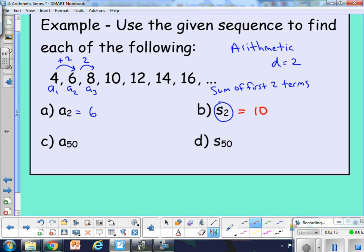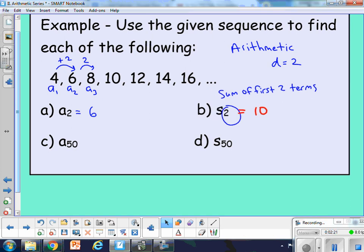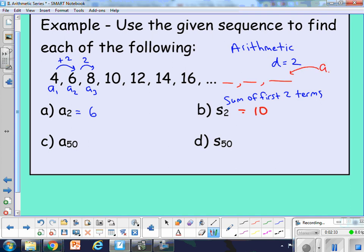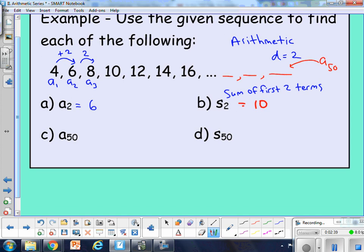A sub 50, if this sequence were to continue, eventually there would be some 50th term out there, and the issue is what is its value? That's what a sub 50 is asking us for. Just imagine the sequence kept going. There would be a 50th term out there. And to find that, we're just using the explicit formula for the sequence.